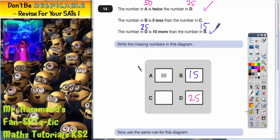Now, we can go back to the second clue and use the second clue to figure out what C is. The number in B is 5 less than the number in C. So B is 15, and that's 5 less than whatever C is. 5 less than whatever C is would be 20. 15 is 5 less than 20. So C must be 20. And that's the first grid done.